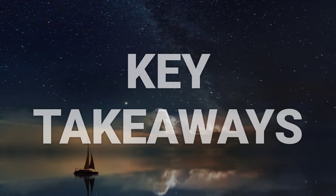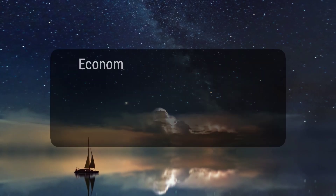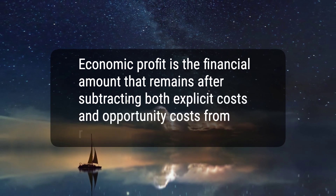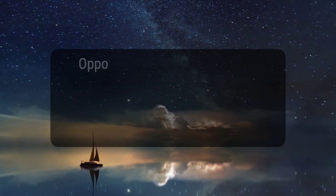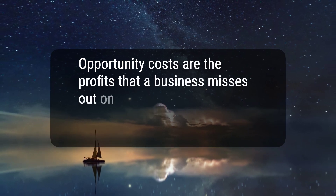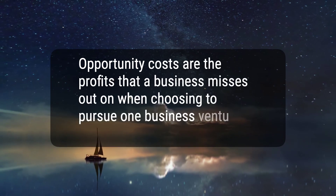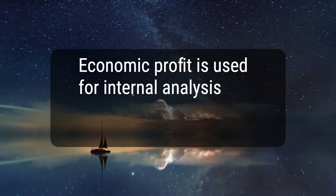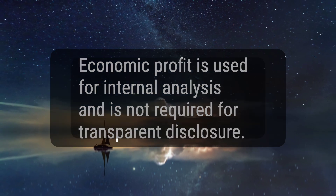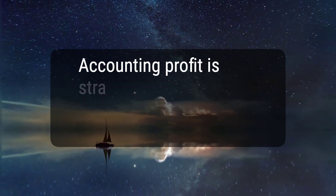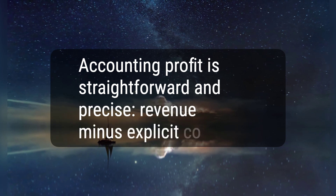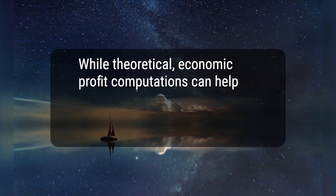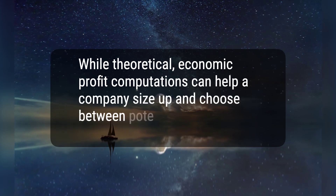Here are five key takeaways. 1. Economic profit is the financial amount that remains after subtracting both explicit costs and opportunity costs from revenue. 2. Opportunity costs are the profits that a business misses out on when choosing to pursue one business venture over another. 3. Economic profit is used for internal analysis and is not required for transparent disclosure. 4. Accounting profit is straightforward and precise — revenue minus explicit costs. 5. While theoretical, economic profit computations can help a company size up and choose between potential business ventures.